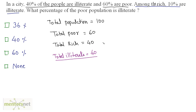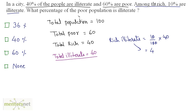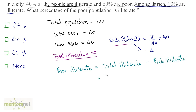Among the rich, 10% are illiterate. So rich illiterate is equal to 10% of 40, which is 10 by 100 times 40, equals 4. So 4 rich people are illiterate. If we subtract the rich illiterate from the total illiterate, what remains is the total number of poor people who are illiterate. So poor illiterate equals total illiterate minus rich illiterate: 40 minus 4, that is 36.